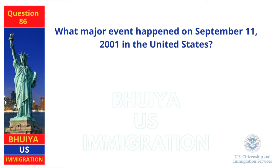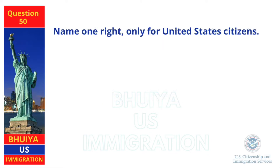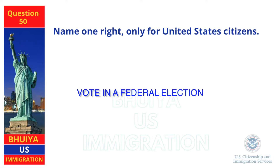What major event happened on September 11, 2001 in the United States? Terrorists attacked the United States. Name one right only for United States citizens. Vote in a federal election.